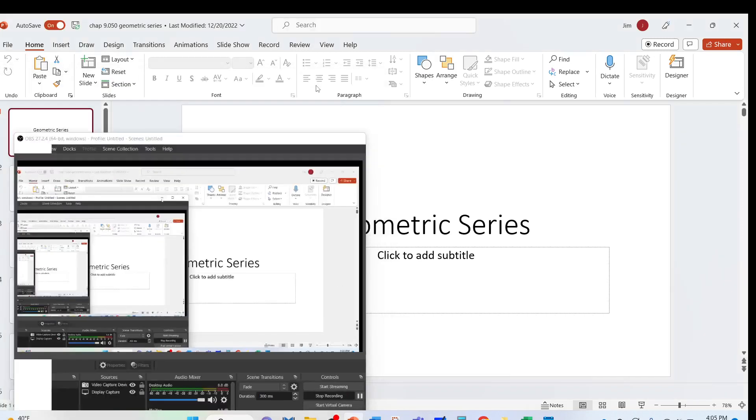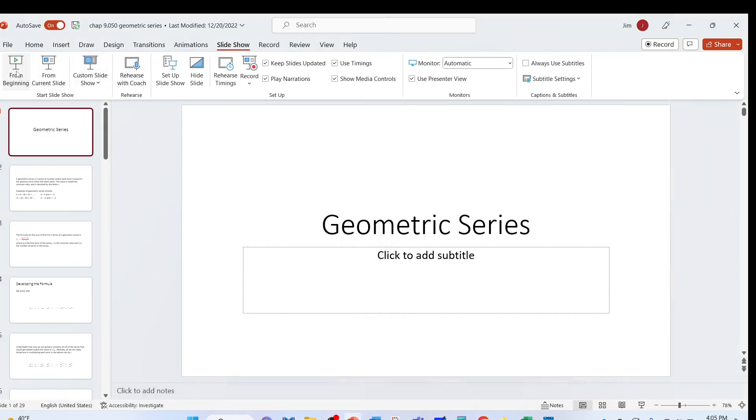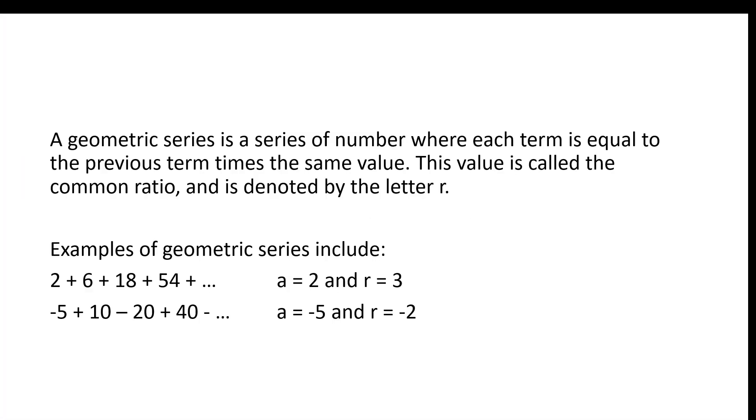In this video, we're going to talk about geometric series. A geometric series is a series where each term is equal to the previous term times the same value. This value is called the common ratio and is denoted by the letter R.